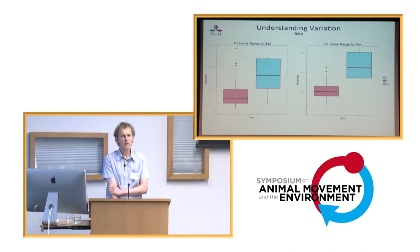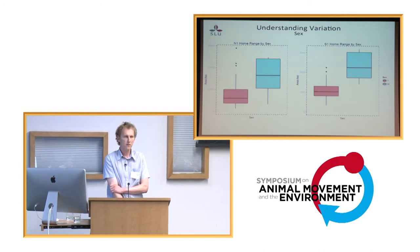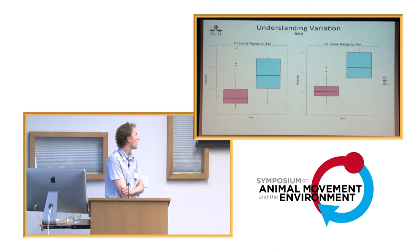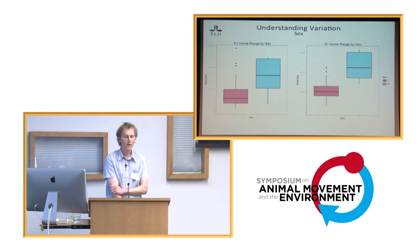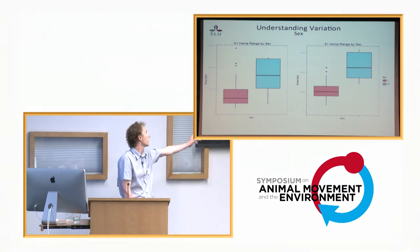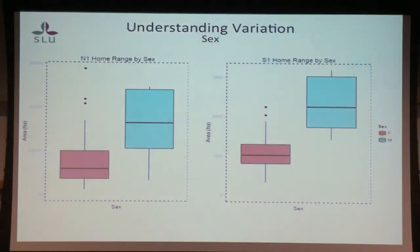Sex is clearly a cause of variation in moose. Males are a lot bigger, and this is perhaps reflected in the home range size, where their home ranges are often twice as large as the females'. This is true for both the north and the south.